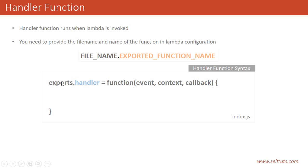In Node.js, if you want to make some function visible to the external world, then you have to use the export statement. So the name of the file is index.js and we are exporting a handler function. The name of the handler function is dot handler and the syntax is that it is a function which accepts three arguments: event, context, and callback. We will see in detail about these arguments in the subsequent videos.